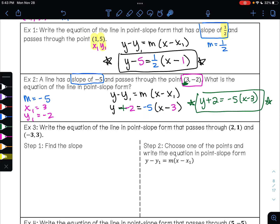Now on example 3, it's the same process except here we're not given the slope. So we'll have to find the slope first. So it says write the equation of the line in point-slope form that passes through the point (2,1) and (-3,3). Our first step is to find the slope. So remember that our slope formula is y₂ minus y₁ over x₂ minus x₁. The best piece of advice I can give you is to label your points. x₁, y₁, x₂, y₂. So we'll have 3 minus 1 over negative 3 minus 2.